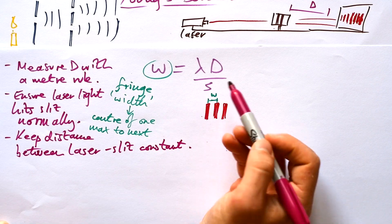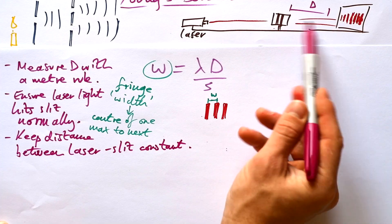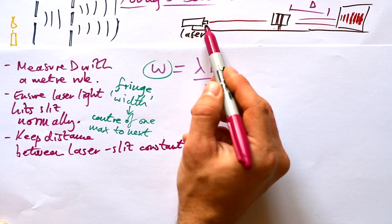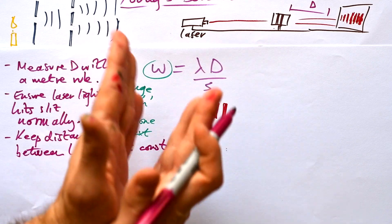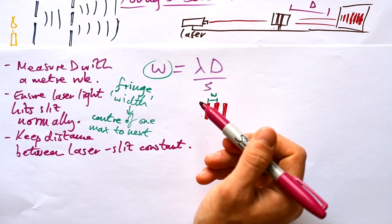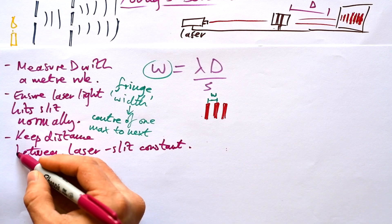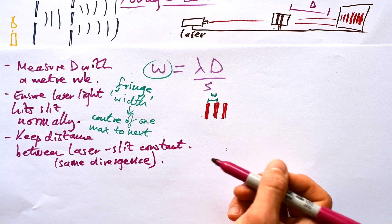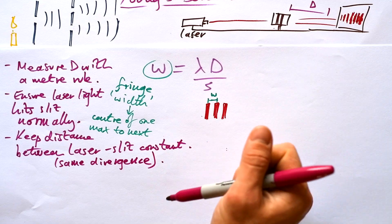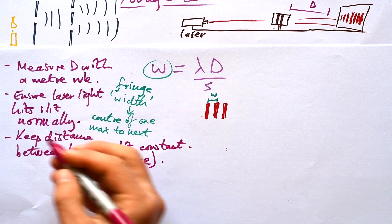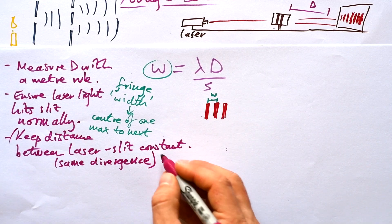Theoretically that shouldn't make a difference should it if we change it because it's only this distance here that matters but the light is going to diverge it's going to spread out a little bit as it goes through the slit so it is going to make a small difference not super important but worth mentioning. You could argue that actually it's only the total distance that affects that but hey that's why I say it's maybe worth mentioning maybe not.